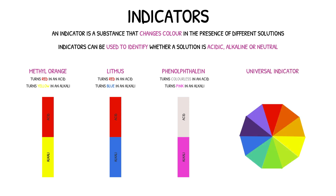Universal indicator is a pH indicator that displays several different colours over a range of pH values. For example, in alkaline solutions with a higher pH it will display a blue or violet, whereas in acidic solutions with a lower pH it will display a red or orange. Universal indicator is largely preferred as it also gives indication as to the strength of a solution instead of simply stating whether it's acidic or alkaline.